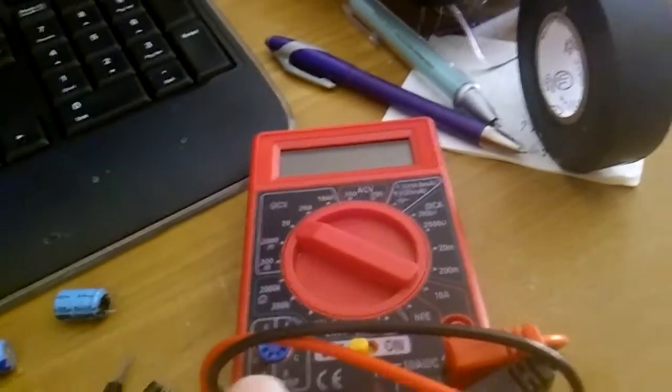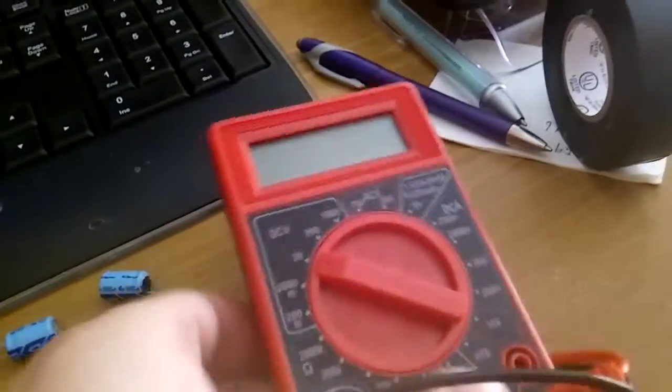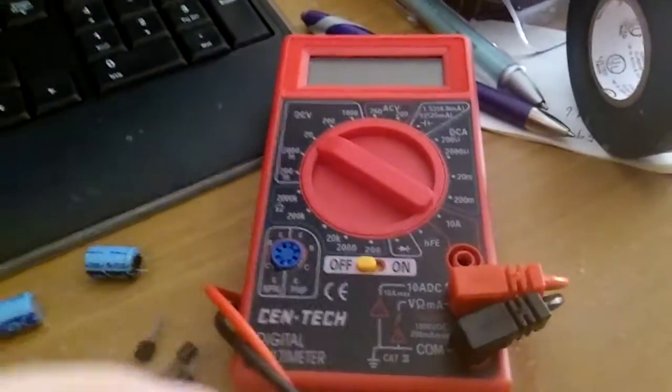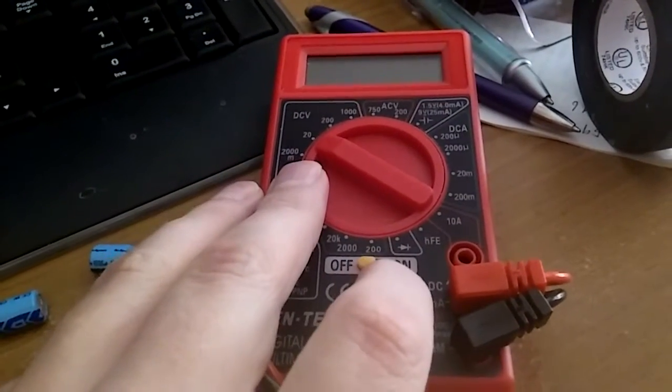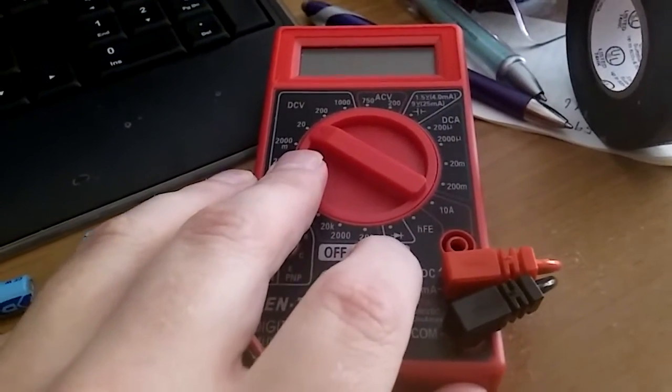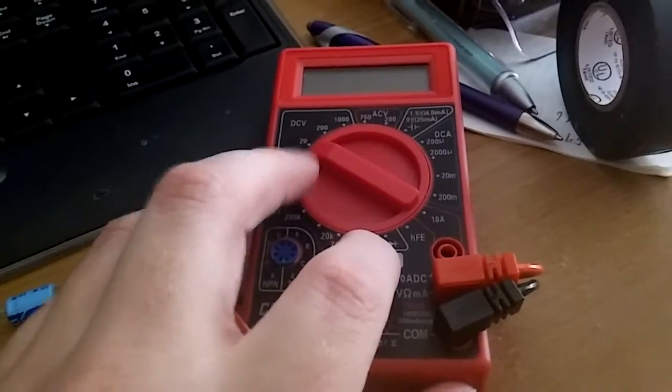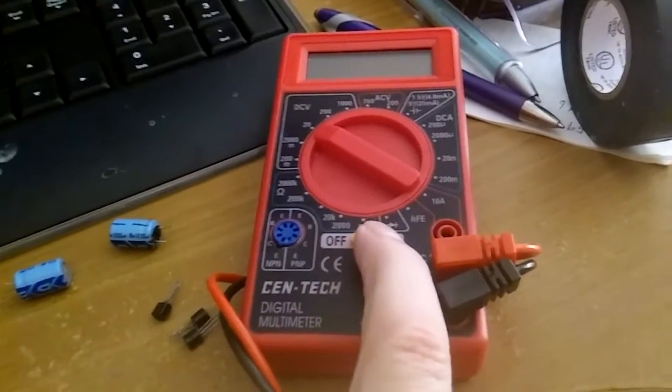This is the Harbor Freight meter I was using. The only other voltmeter I have is analog. So this setting right here by the on button looks like an arrow with a plus. That's the diode setting, that's what you use for transistors and diodes.